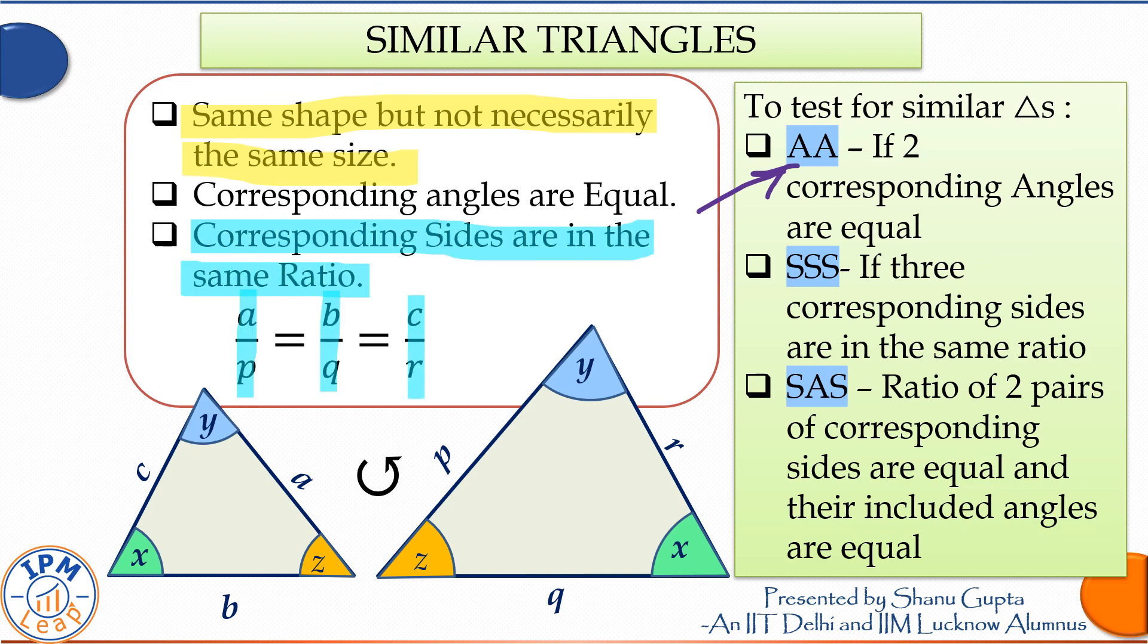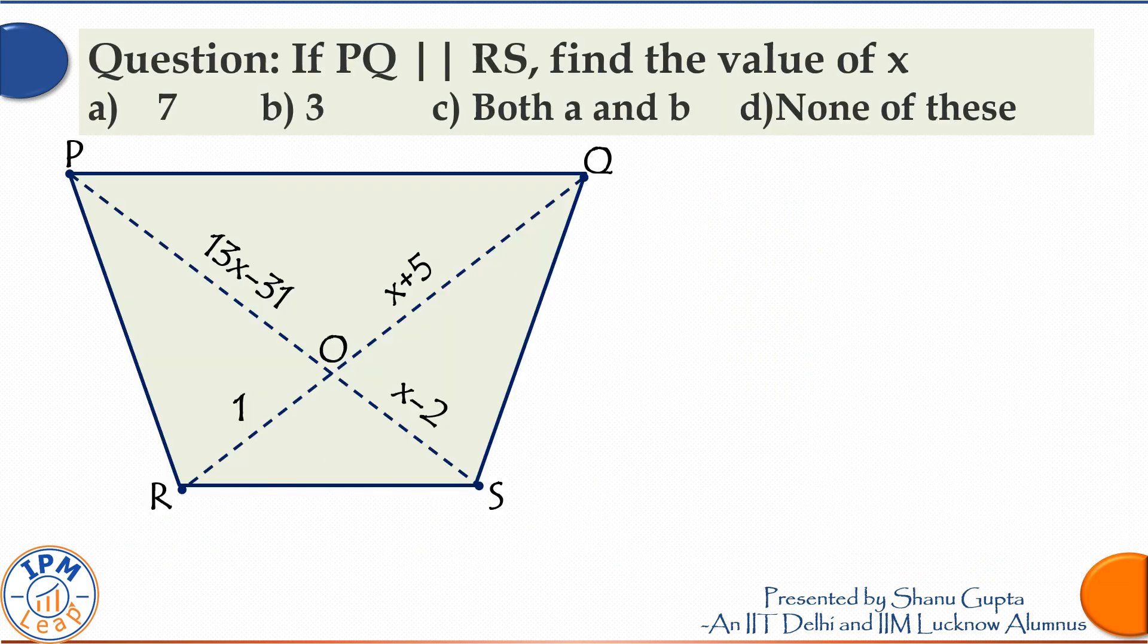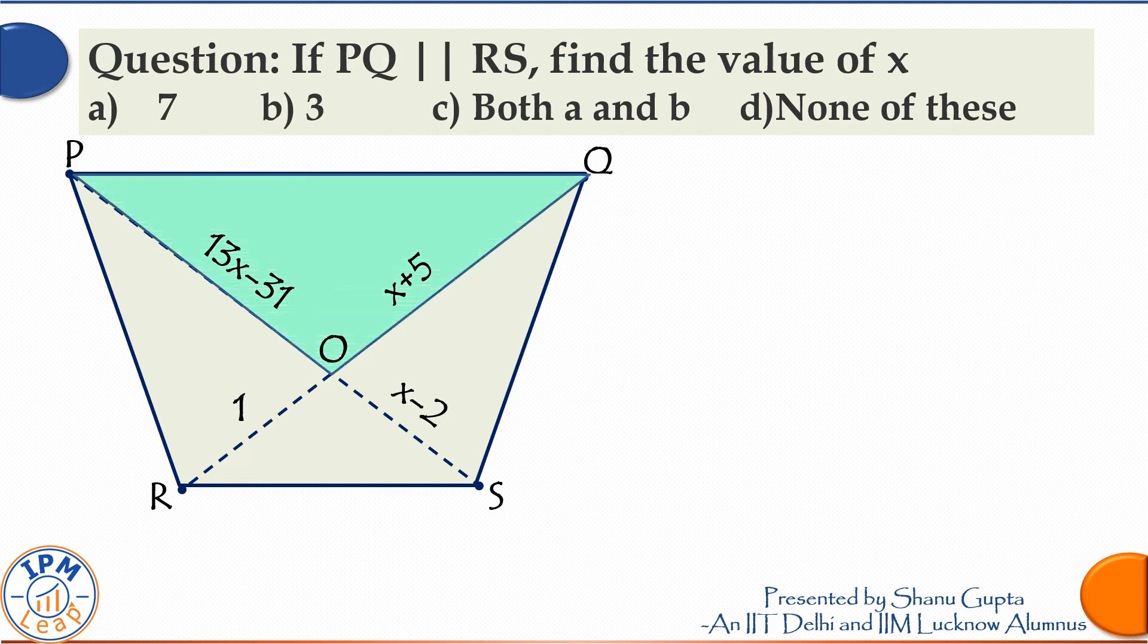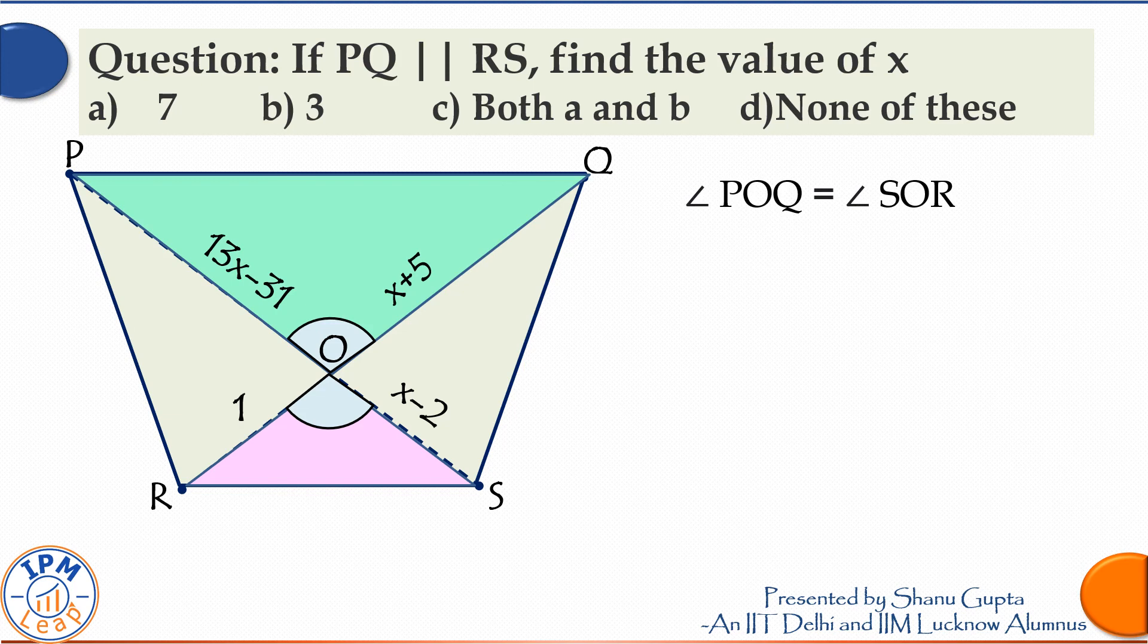So the two interesting triangles to look out for in this trapezium are triangle POQ, the green one, and triangle SOR, the pink one. Angle POQ, follow the cursor, angle POQ is clearly equal to angle SOR...